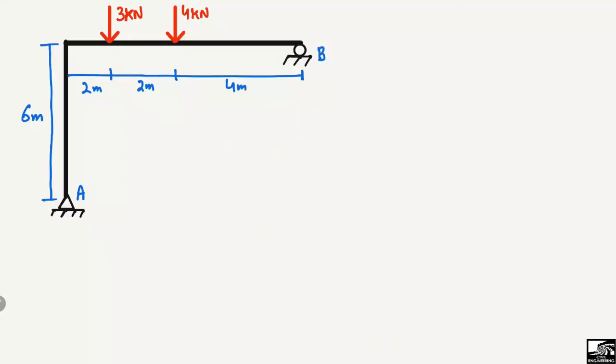Hello guys, welcome back to the civil engineering YouTube channel. Please subscribe for our daily civil engineering videos. Today we are going to analyze a frame structure composed of a beam and column. The vertical column has a length of 6 meters and there is a beam with a length of 8 meters with two different loads acting on it.